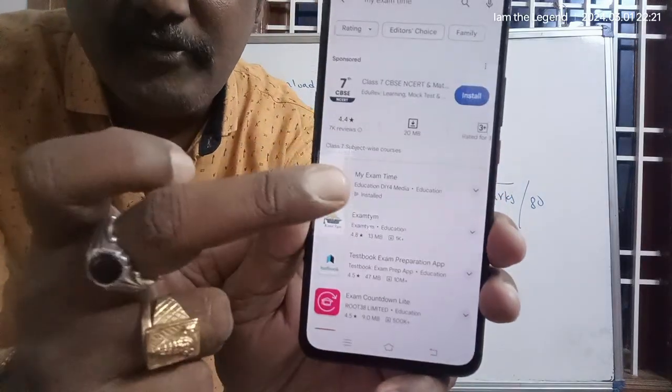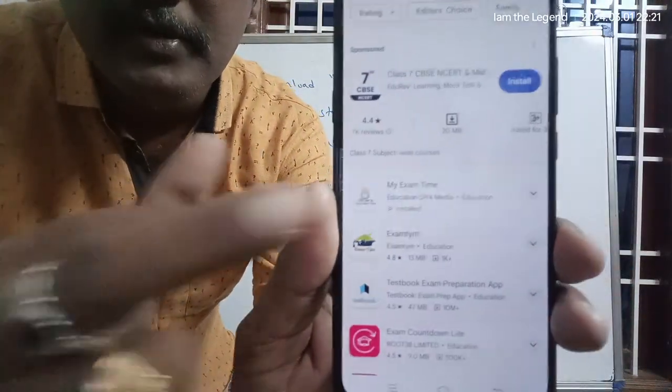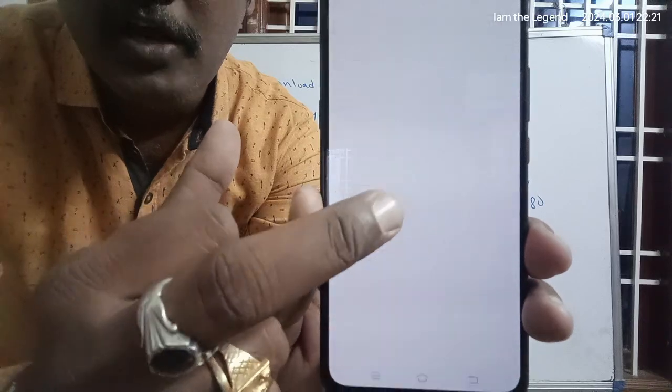You can type like this: My Exam Time. So select it. My Exam Time, you are getting at the second one down. So this is the My Exam Time app. Just click on My Exam Time.